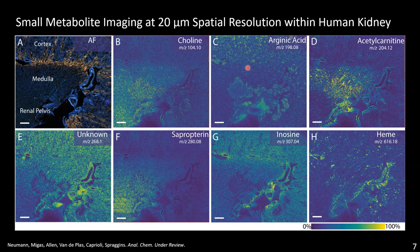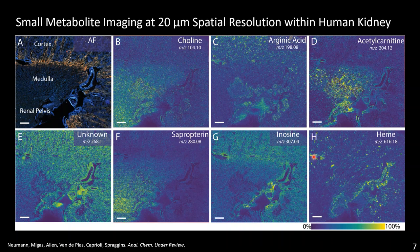Here are some example images we get with imaging mass spectrometry. On the left is a microscopy image where this region is the cortex of the kidney, this is the medulla, and then this is the renal pelvis. I'm showing seven different ions here — the distribution of choline, argininic acid in the cortex, acetyl carnitine within the medulla, and unknown ions. This is particularly powerful because we can detect chemicals whose identity we know and some we don't — which we can identify later. Areas in blue are low intensity, yellow is high intensity, giving us a chemical map of where each ion is located.